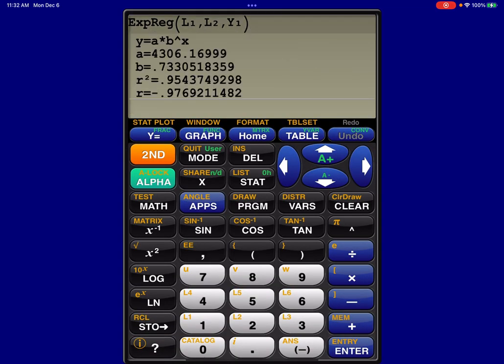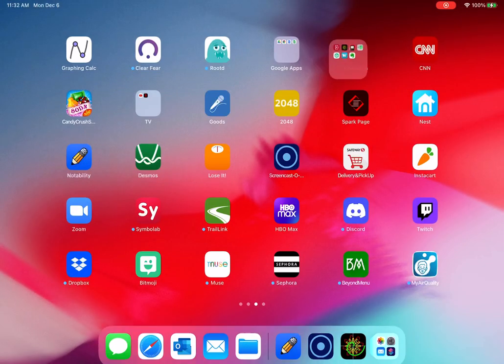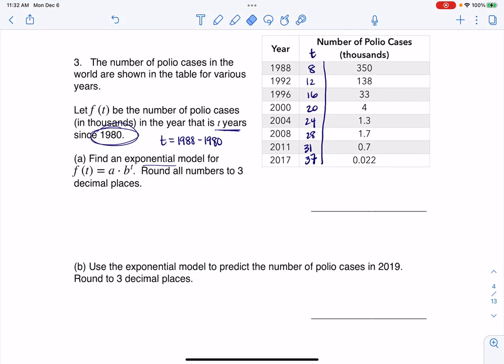If I look, there's my A value and my base value. I can see I actually have a little bit of exponential decay because my base is less than 1. Let me go copy that over because that's my answer for part A. If I start to look at this, we had A was 4306.170. And my base was 0.733.